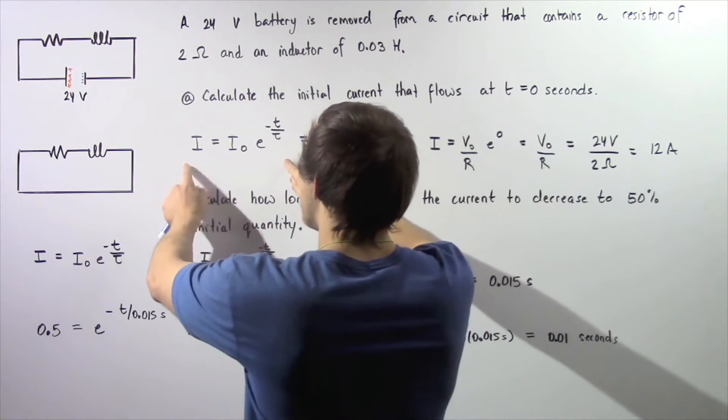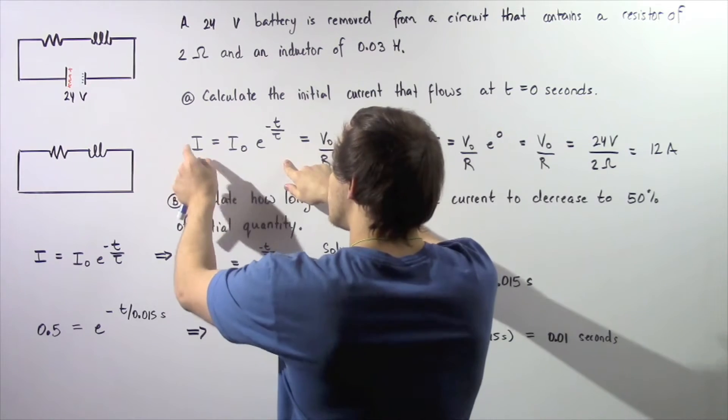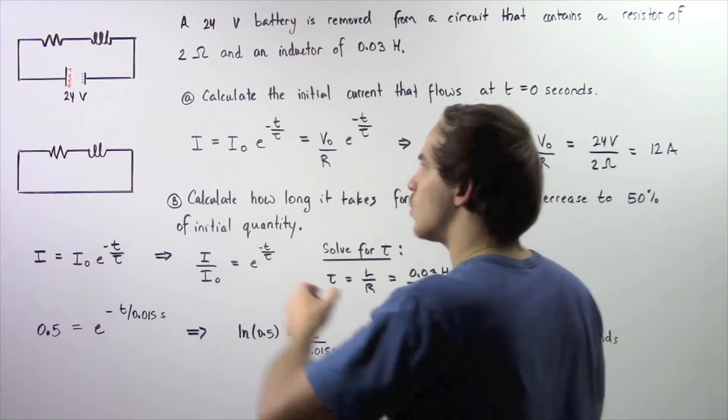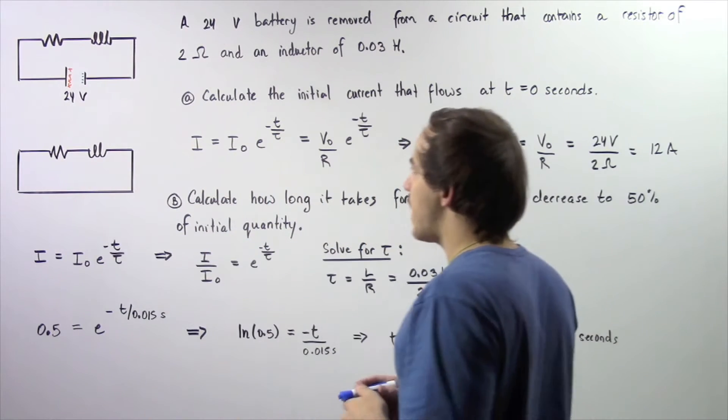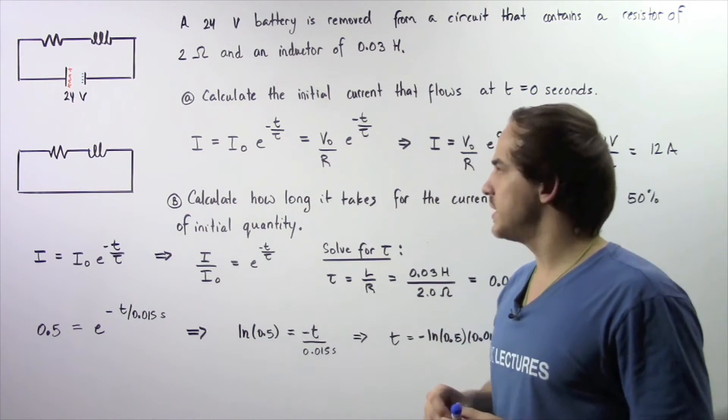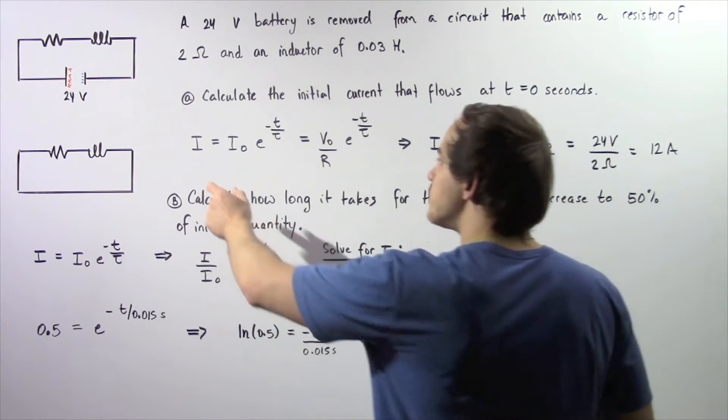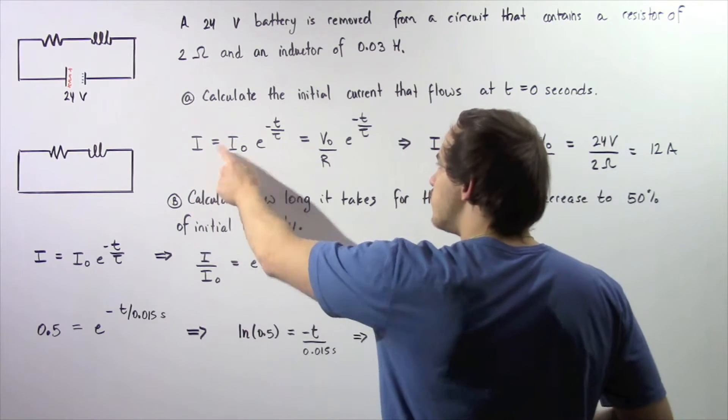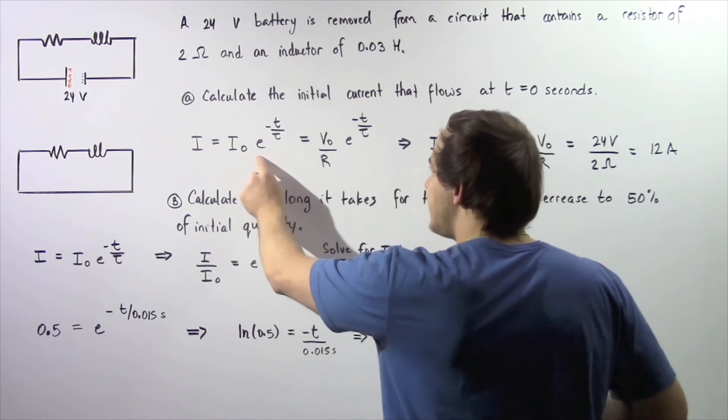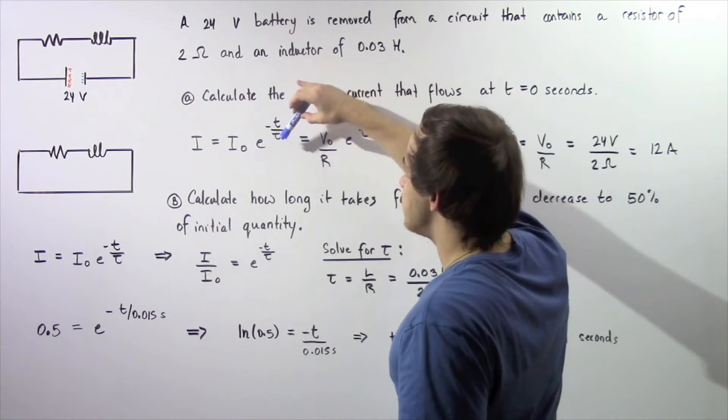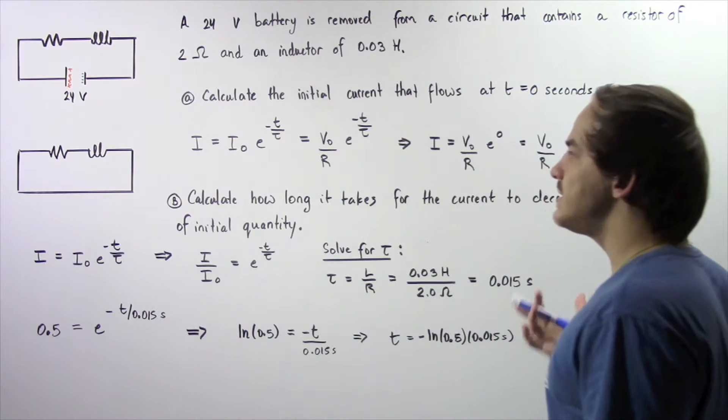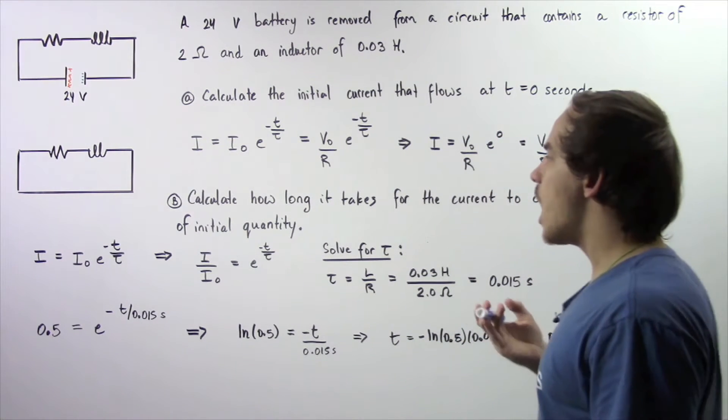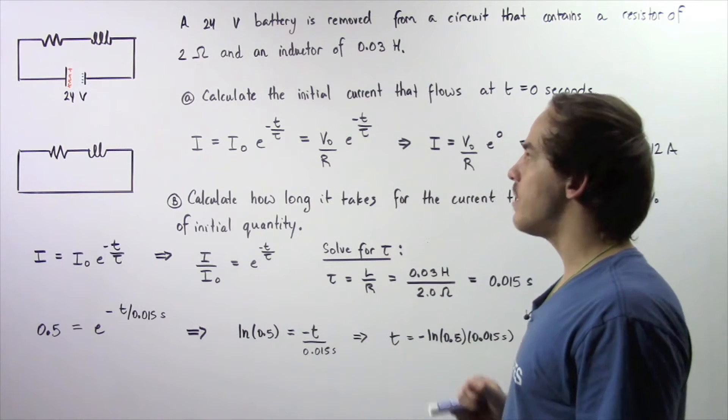This is the equation that gives us the electric current I as our electric current decreases. Once we remove our battery, we derived this equation in the previous lecture. I is equal to the initial electric current multiplied by E raised to the power of negative T divided by tau, where tau is simply our time constant. It's equal to the ratio of our inductance divided by resistance.